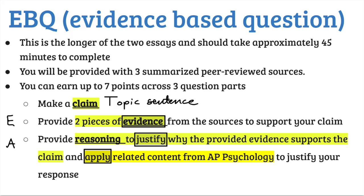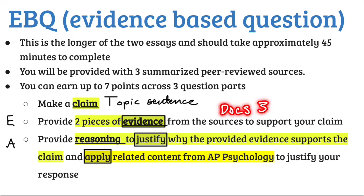I use the mnemonic device T-E-A. T is for topic sentence — you make a claim of 'according to the sources, this leads to that,' or 'this should be happening,' or 'this is proposed to have happened.' Then you need to give two documents that support that claim. With the evidence section, you are going to have both document and content knowledge from class — they just put the content knowledge under the apply and justify section.